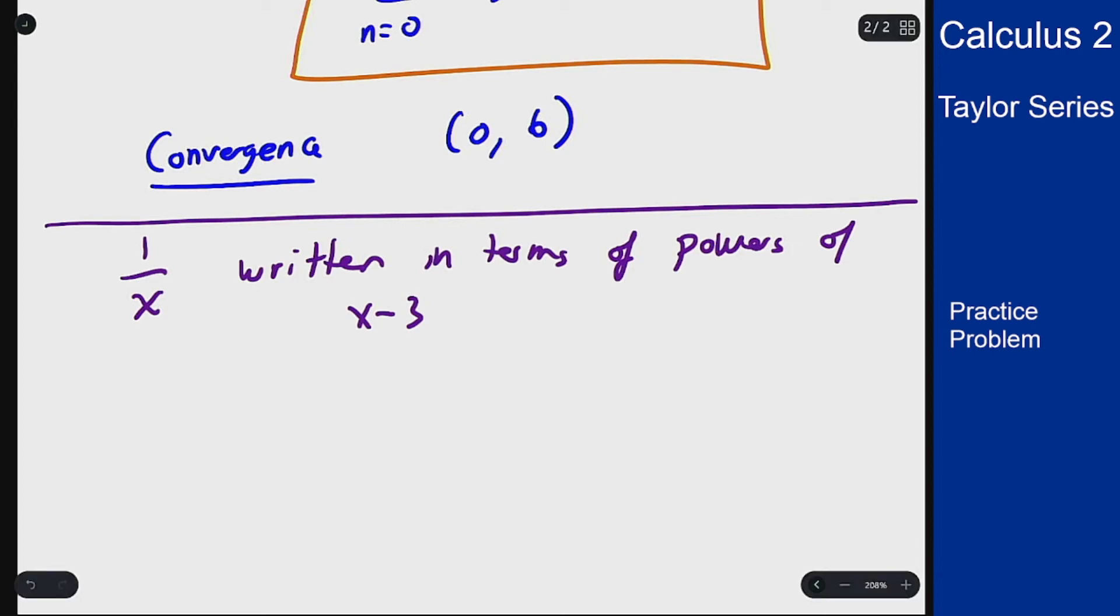Now if I had something like just 1 over 1 minus x minus 3 our normal tricks for power series tells we can write this as the sum n from 0 to infinity of x minus 3 to the n. That's a good start because it has the right terms in it. So I want to use that idea to rewrite this in a way that looks something like this so I can then get the right series out of it.